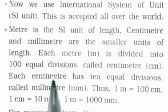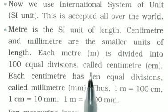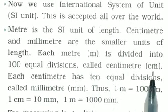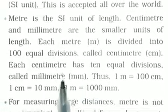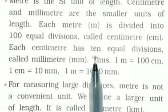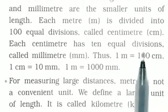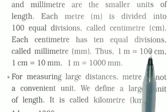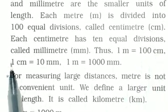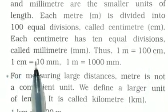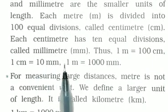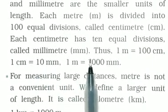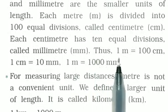Each centimeter has 10 equal divisions called millimeters (mm). Thus, one meter is equal to 100 centimeters, and one centimeter is equal to 10 millimeters. One meter is equal to 1000 millimeters.